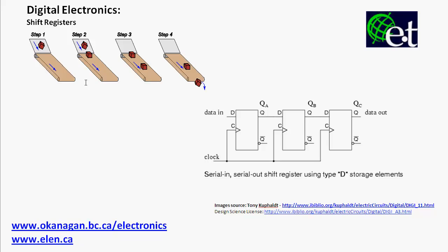Here is an example of a shift register shown in analogy form: a conveyor belt, where each one of these little blocks represents a bit. A bit comes in and gets onto the conveyor belt, the second bit comes in and gets onto the conveyor belt, and then the first bit goes off, and the second bit goes off. This serial-in, serial-out shift register could also be considered a first-in, first-out device.